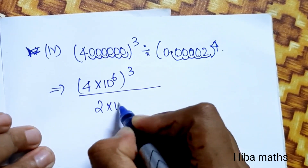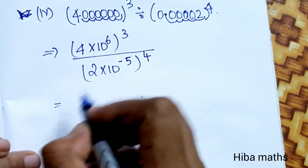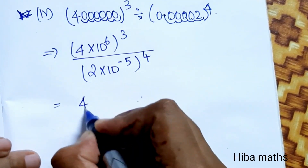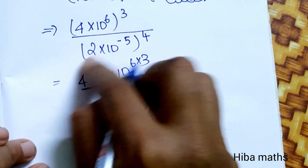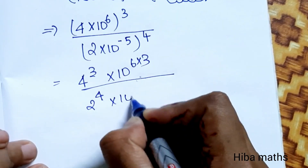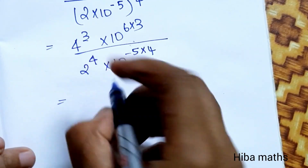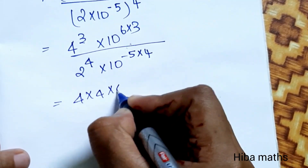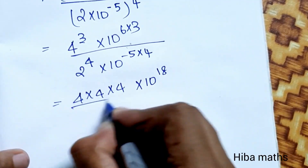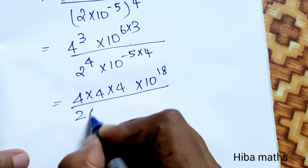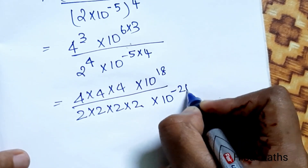2 into 10 power minus 5, power 4. So 2 into 3, 4 power 3 — 10 power 6 into 3 divided by 2 power 4 into 10 power minus 5 into 4. 4 cubed into 4 — into 10 power 18 divided by 2 power 4. 2 into 2 into 2 into 10 power minus 20.